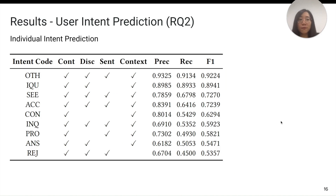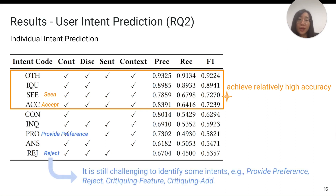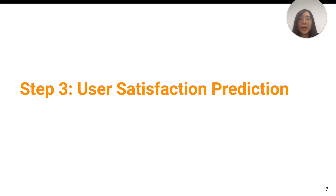In addition to performance over all intent labels, we investigated performance per intent. Some intents such as 'seen' and 'accept' can achieve relatively high accuracy. But for other intents such as 'provide preference,' 'reject,' and critiquing-based intents, it remains challenging to predict them accurately. From a features perspective, all feature categories contribute to prediction, especially content and context features. Now that we've introduced how we classify user intent and recommender actions and how we predict user intent, let's recap our work on the third question: user satisfaction prediction.